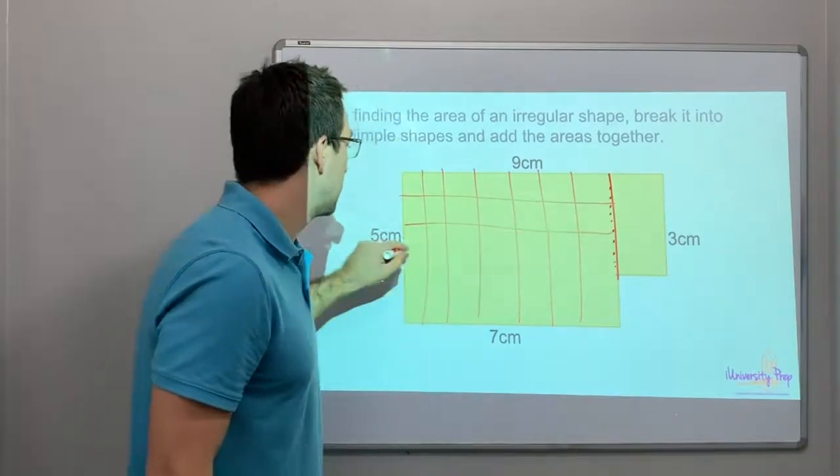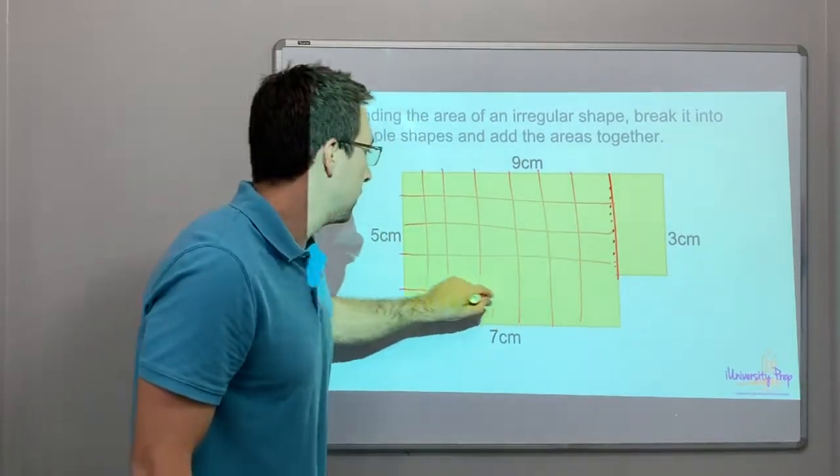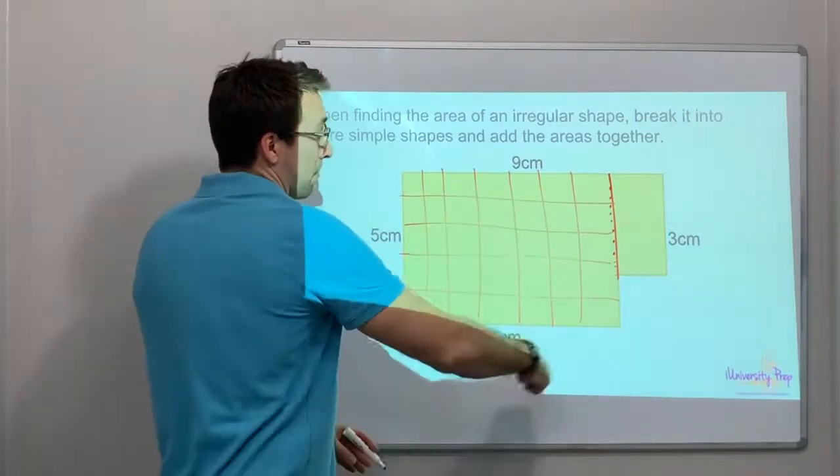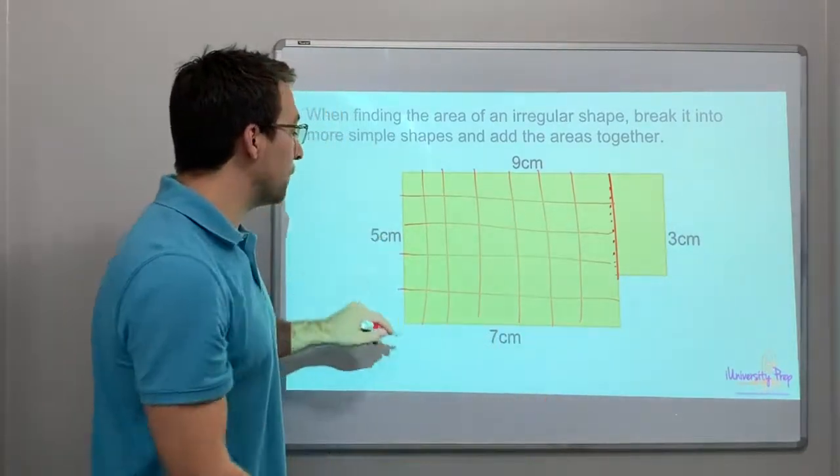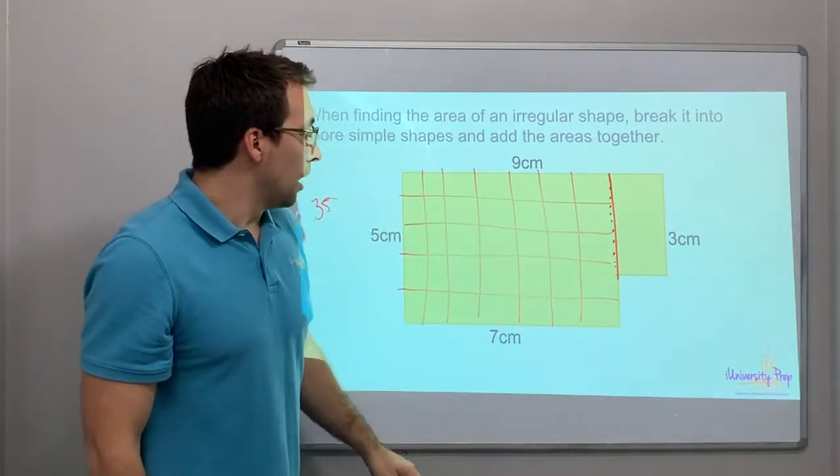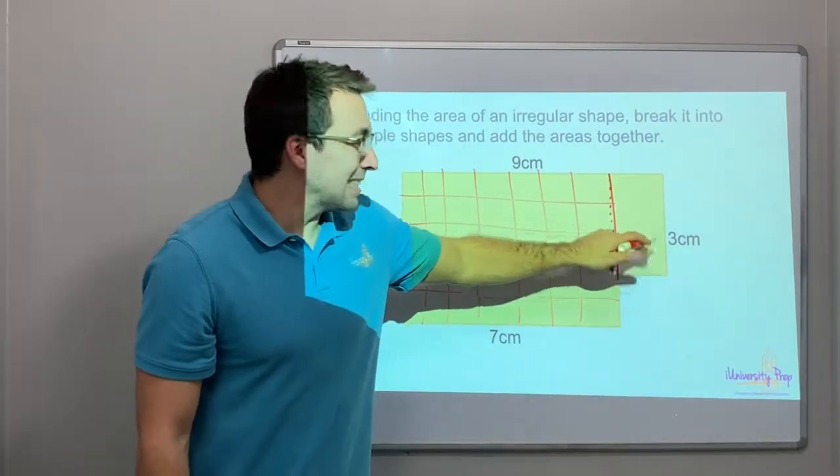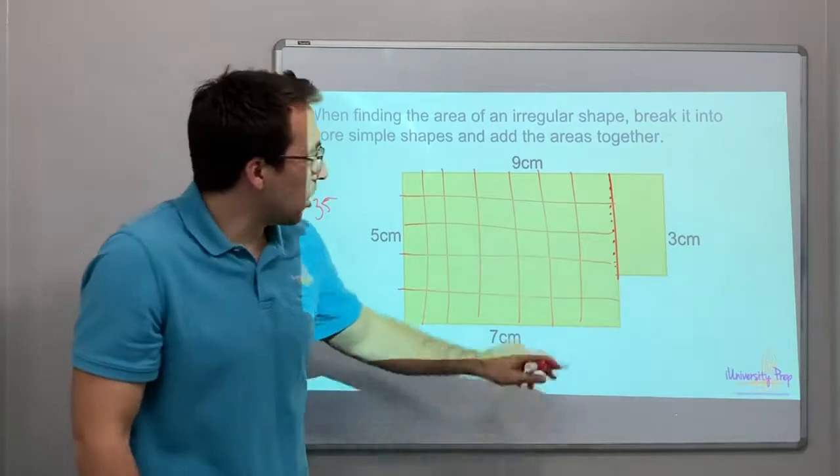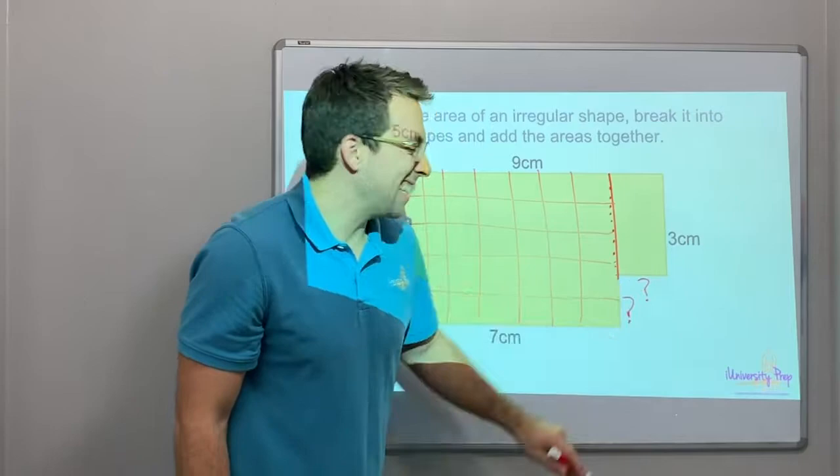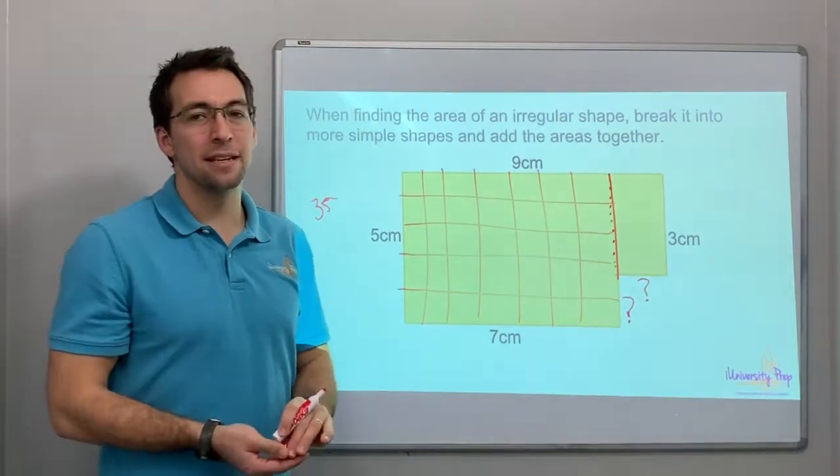That, look, that's simple. That's 7 times 5 is 35. That's 35 squares. How big is this? How do we figure it out? Because don't we have missing measurements right here? Yeah, we do.